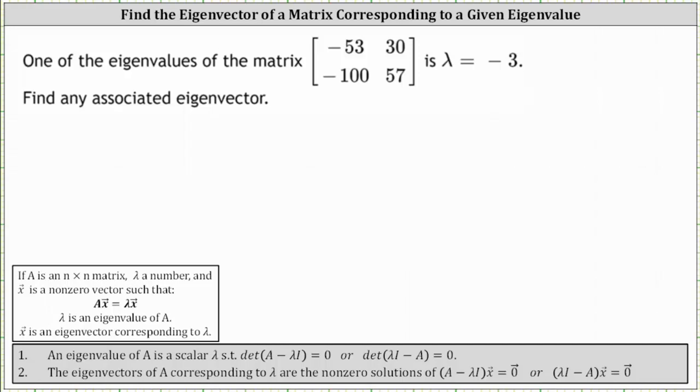One of the eigenvalues of the given two by two matrix is lambda equals negative three, whereas to find any associated eigenvector.